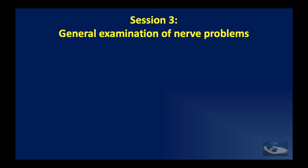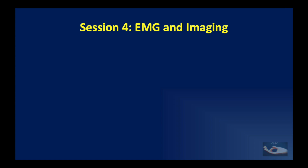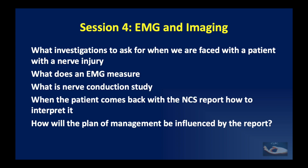In session 3, we shall see the general examination of nerve problems — how to check motor function, how to check sensation accurately, and how to check autonomic function. Session 4 will be on EMG and imaging, where we will clarify what investigations to ask for when faced with a patient with a nerve injury, what an EMG measures, what a nerve conduction study is, how to interpret the report, and how the plan of management will be influenced by the report.